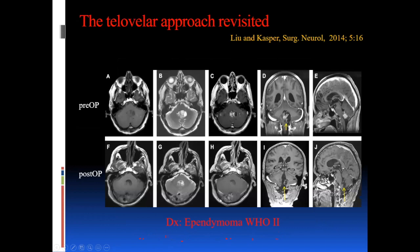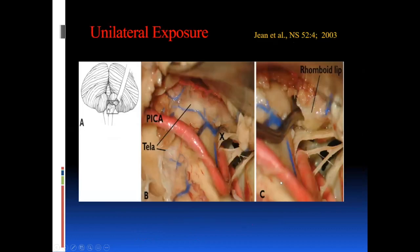This ependymoma was unilaterally more on the right than the left — note how intimately the PICA is involved. The telovelar approach really allows you to follow your vessels. We were able to chisel out the entire tumor; you can see the PICA still hanging in the breeze — we didn't lose a single branch. There was no post-operative stroke and the patient was discharged two days after surgery.